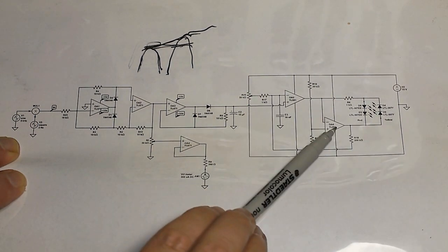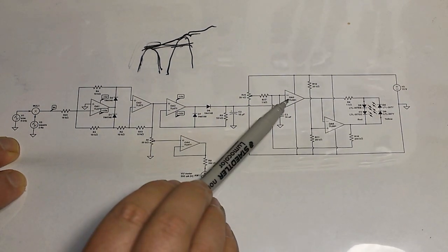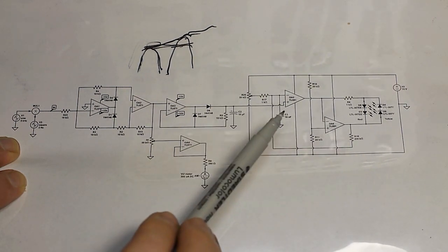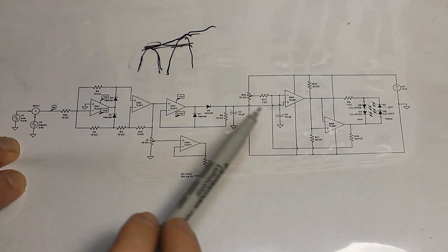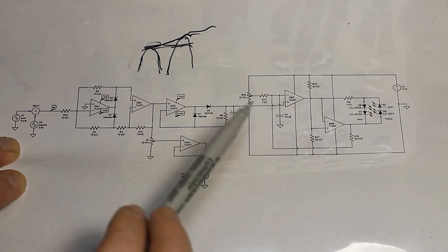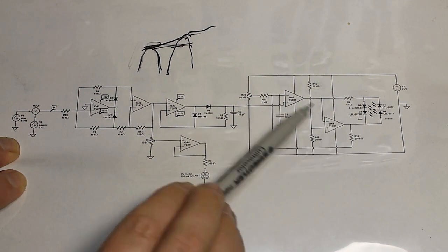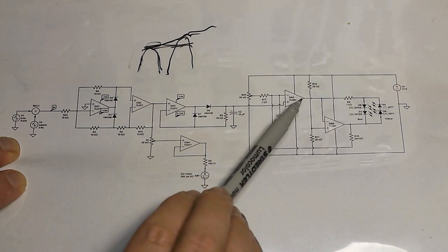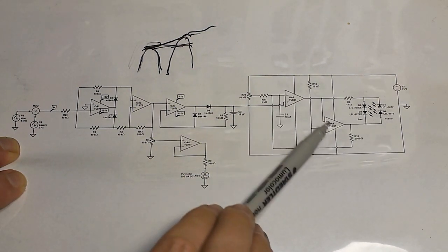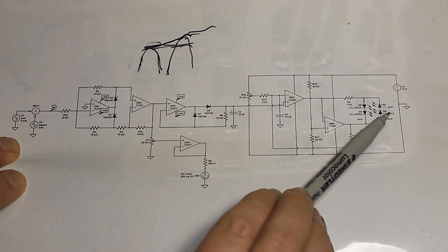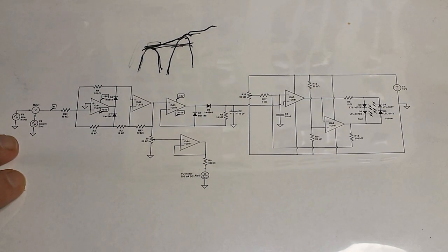The only thing to be careful of when selecting your comparator there is that you do want one with a push-pull output, because of course these need to both source and sink current. Some of them with single-ended outputs where you're supposed to use a pull-up or pull-down resistor, that's not going to work. You're going to need something which can both source and sink current because these two, they swap roles basically as we swap between the two LED pairs. And that's basically it.